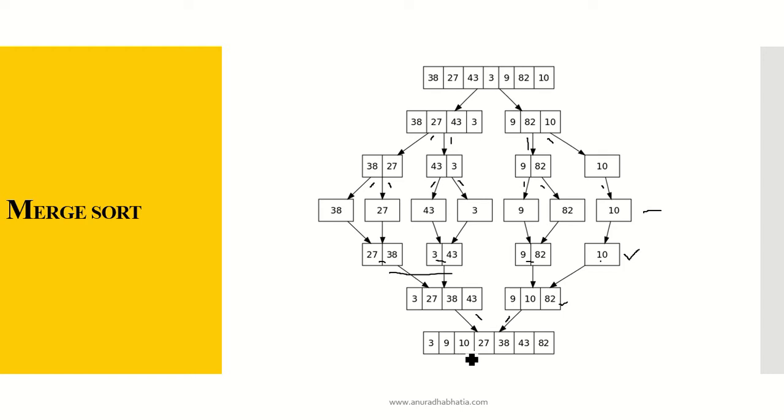It becomes 3, 9, 10, 27, 38, 43 and 82. So you will see the number of passes it requires to sort a particular element even though my number of elements was 7. The number of passes it needed were 1, 2 and in the third pass it was sorted. My data is sorted. Now let's see how the merge sort actually works.